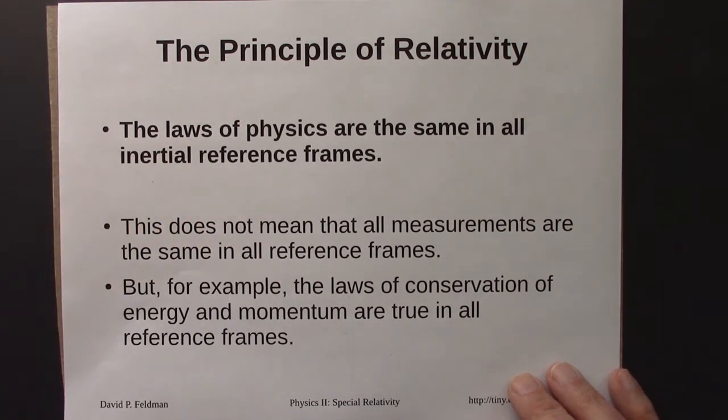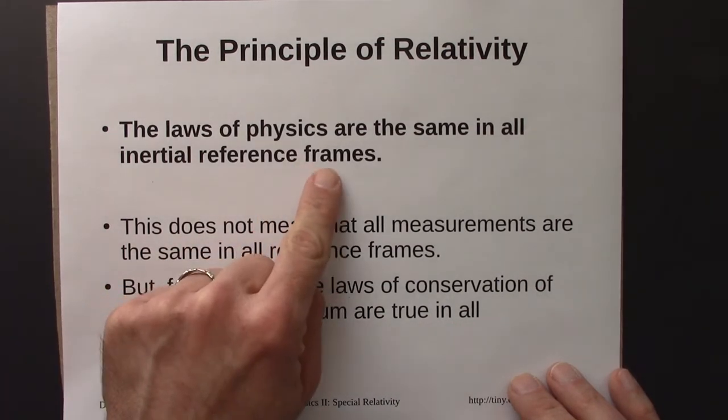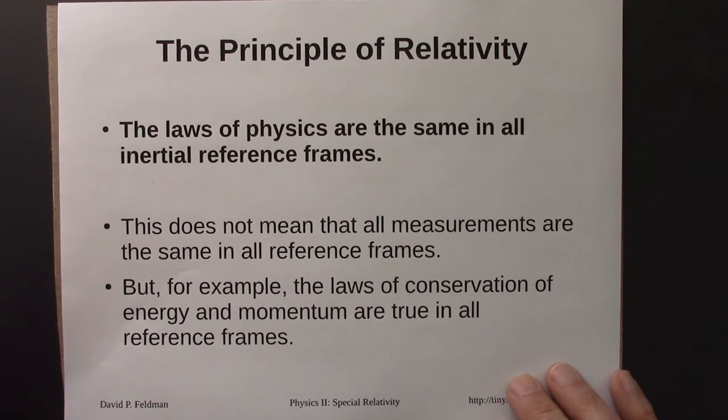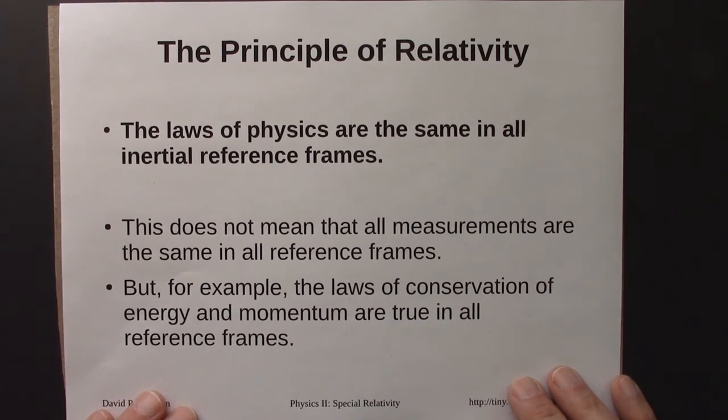And so what we'll see in the next unit is that this statement and the Galilean transformation statement turn out to be in conflict. And this is what will lead us to Einstein's theory of special relativity.